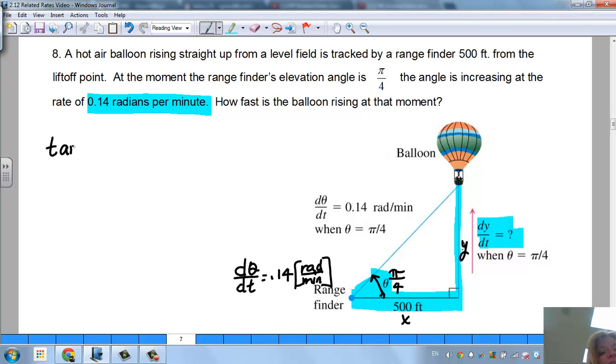So if I do the tangent of θ, I know is opposite, which is y, which is changing over 500. And I'm going to think of this as 1/500 times y. When I go to do the derivative to find the rates, I see the derivative of tangent is secant squared or 1 over cosine squared. So we can do 1 over cosine squared of θ.